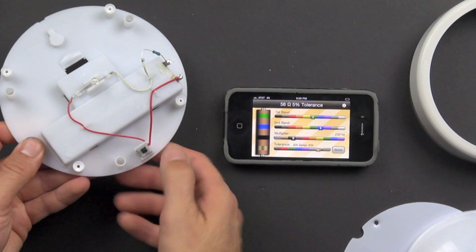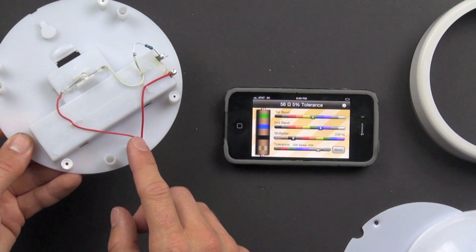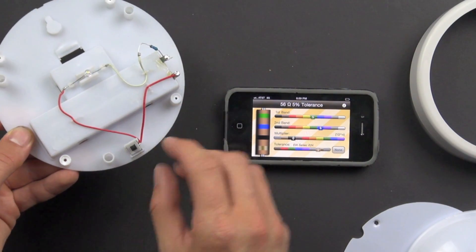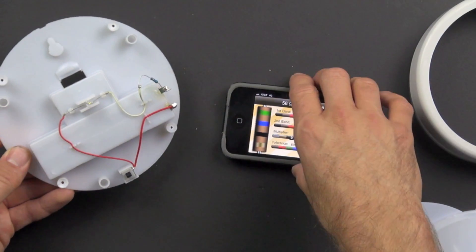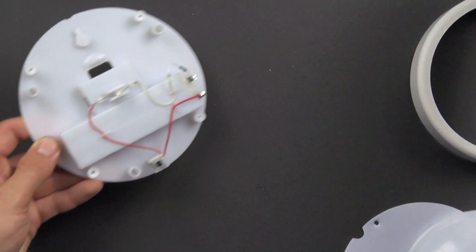And the switch right here is just a momentary switch. Sorry, it's not a momentary switch. It's a continuous switch. So that means when you push it down, it stays down. And when you let it up, it stays up. So the light will stay on after you push it.